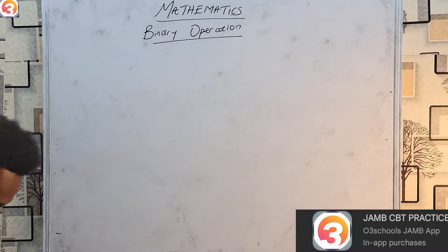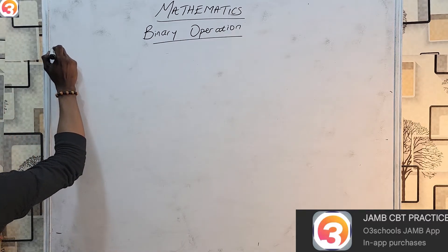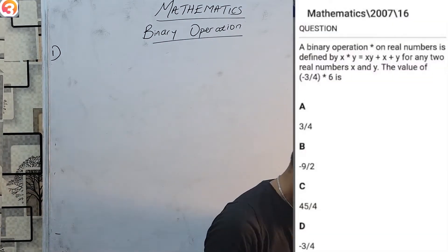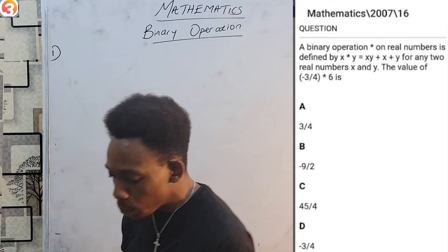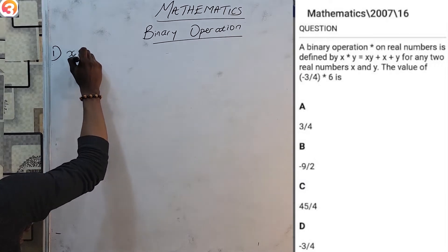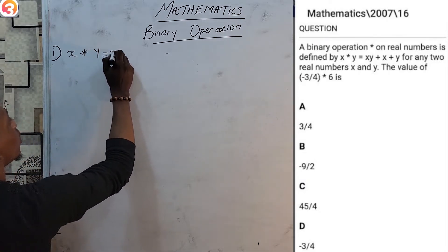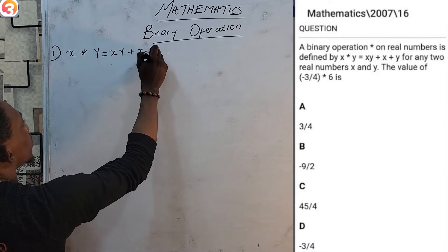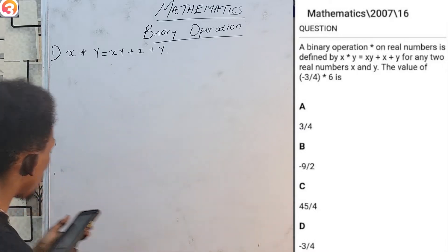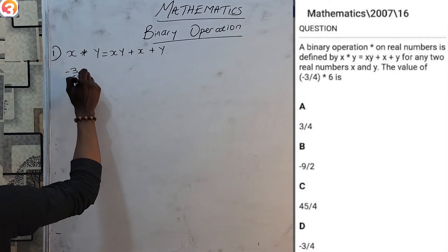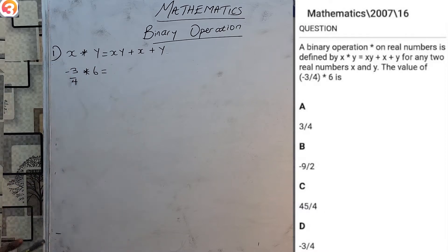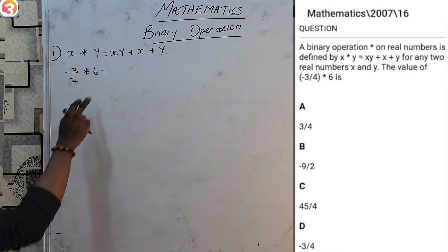Let's open our O3Schools JAMB app and see how questions on binary operation can be solved. Our first question is from the year 2000, question number 16. It says: a binary operation on real numbers is defined by x★y = xy + x + y for any two real numbers x and y. Find the value of (−3/4)★6.